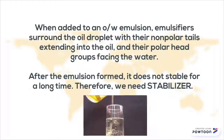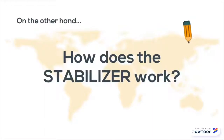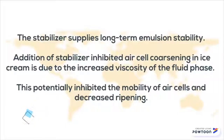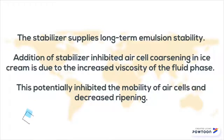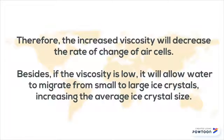After the emulsion forms, it is not stable for a long time, so we need a stabiliser. The stabiliser supplies long-term emulsion stability. Addition of stabilisers inhibits air cell coarsening in ice cream due to the increased viscosity of the fluid phase. This potentially inhibits the mobility of air cells and decreases fluid drainage. Therefore, the increased viscosity will decrease the rate of change of air cells.